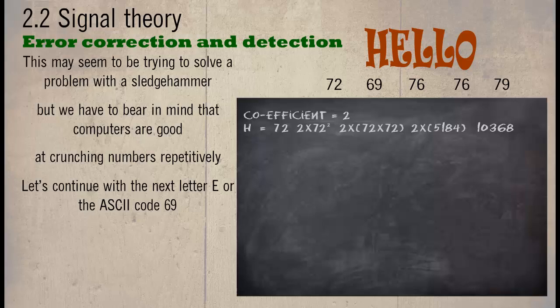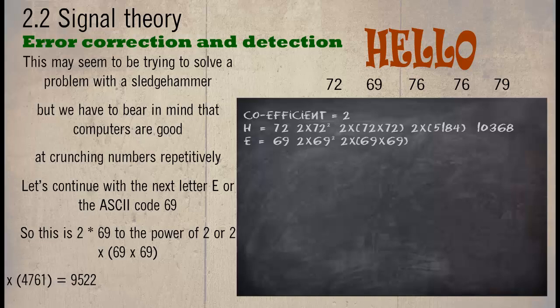Let's continue with the next letter E or ASCII code 69. So this would be 2 times 69 to the power of 2, or 2 times 69 times 69. 2 times 4761 equals 9522.